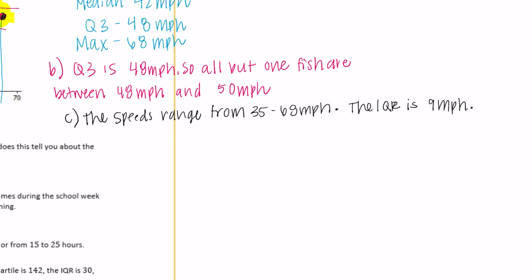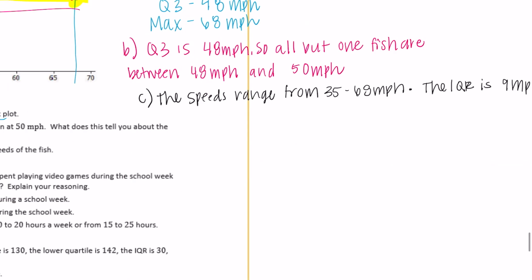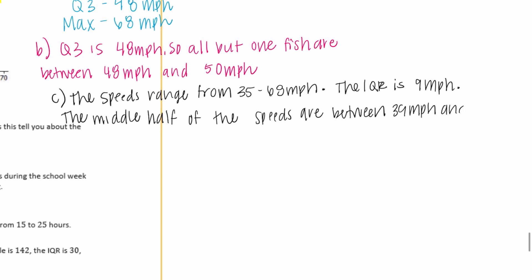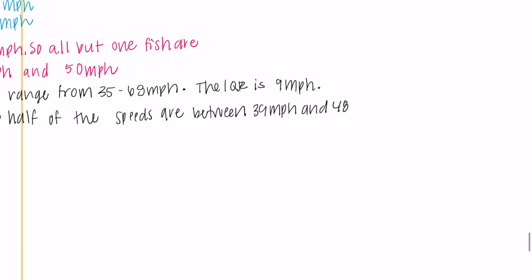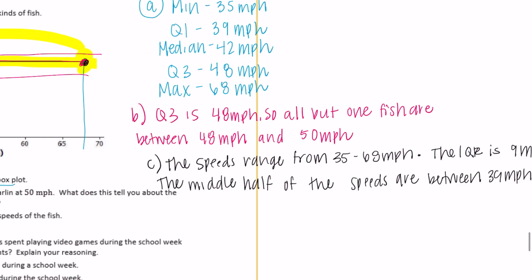The middle half of the speeds are between 39 miles per hour and 48 miles per hour. Half of the speeds are less than 42 miles per hour, since the median is at 42.